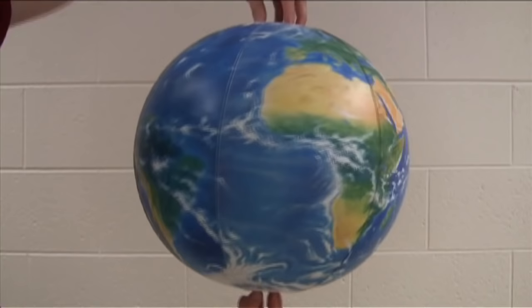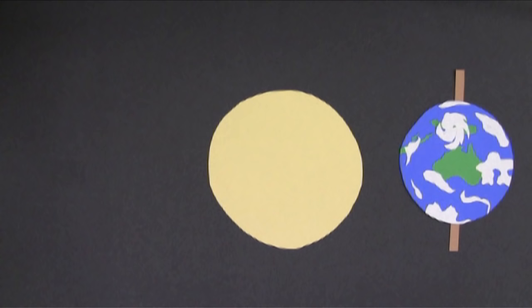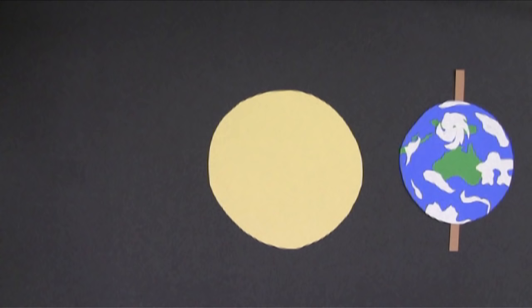Remember, at the same time, Earth is rotating on its axis once every day. The important thing, for the seasons at least, is that the Earth actually isn't straight up and down. It's tilted at an angle of 23.5 degrees.